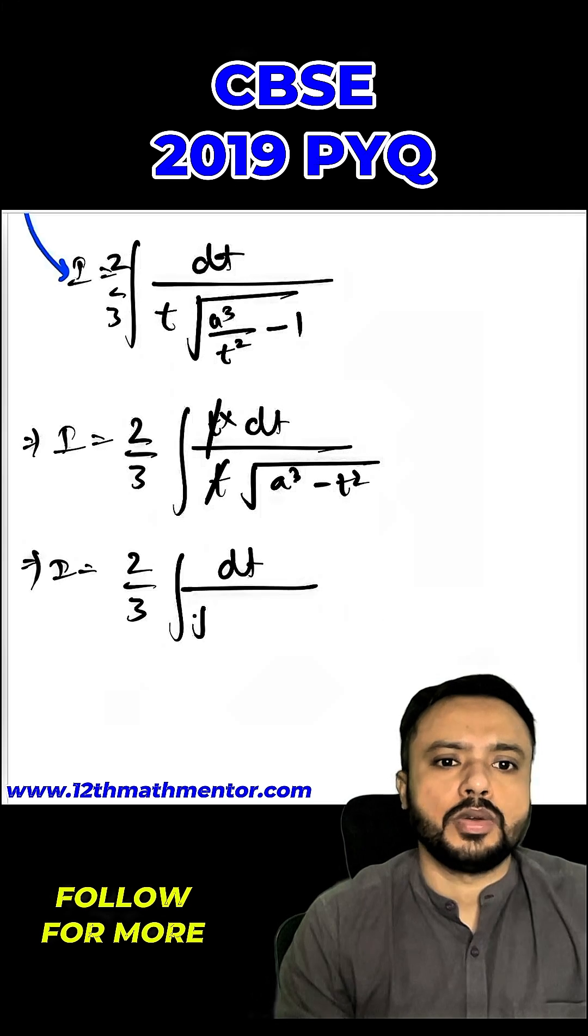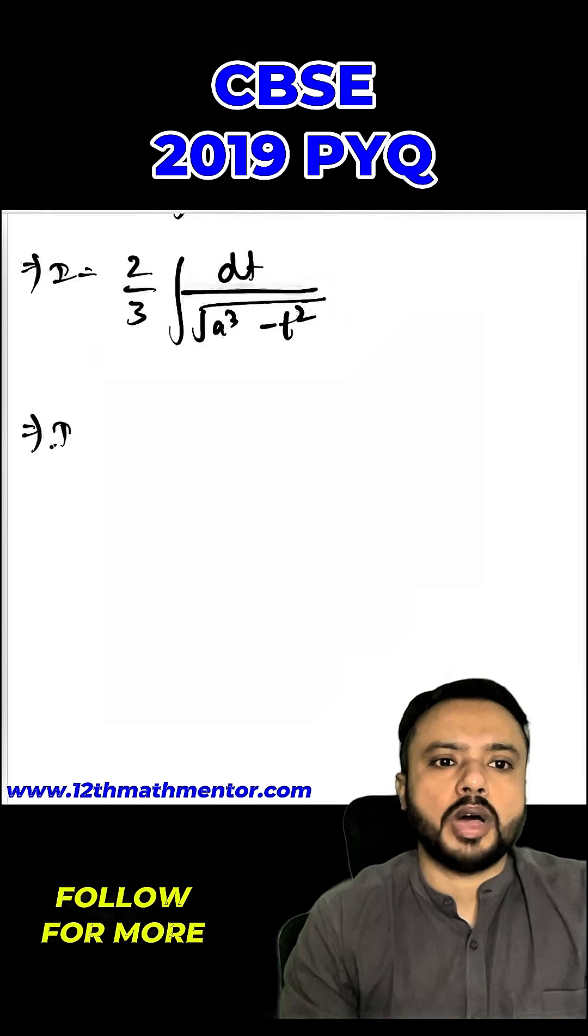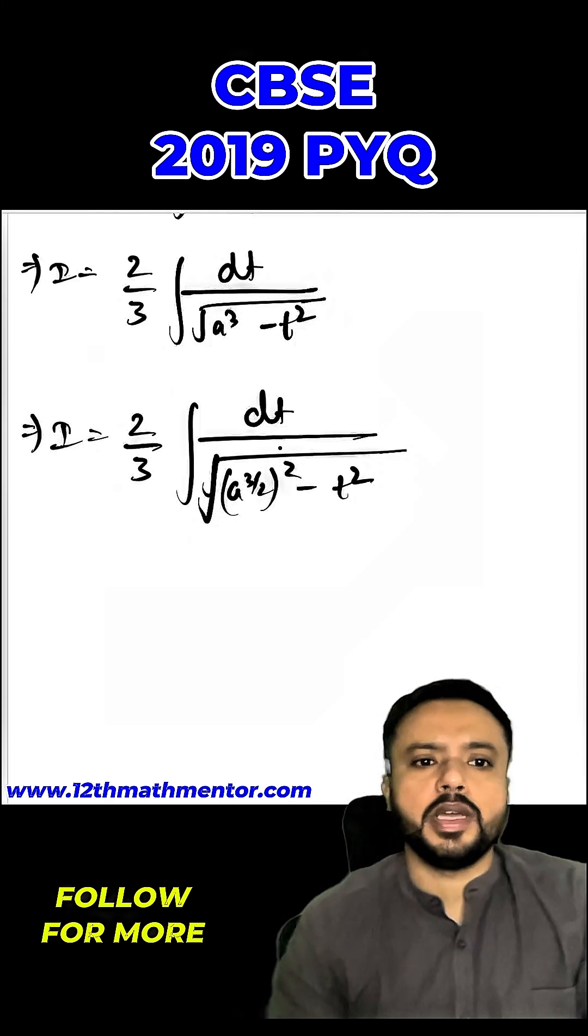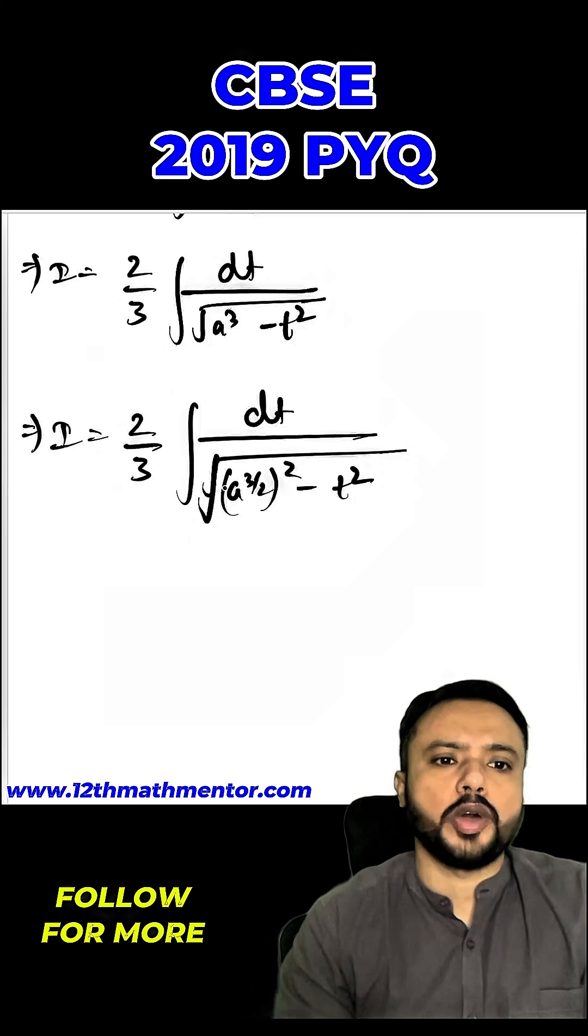I equals to 2 by 3 integral of dt by root of a cube minus t square, so I equals to 2 by 3 dt by root of a raised to the power 3 by 2 square minus t square. So now I am going to use the formula of dx upon root of a square minus x square.